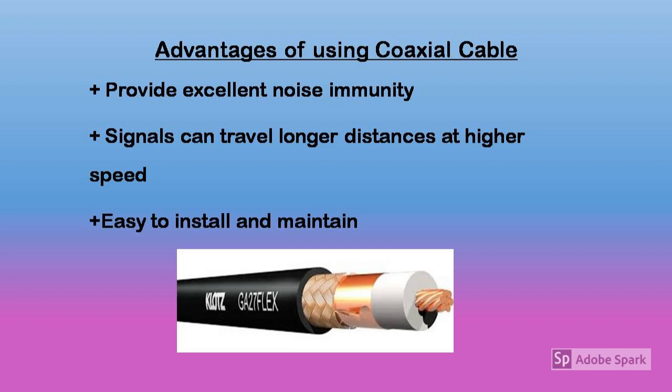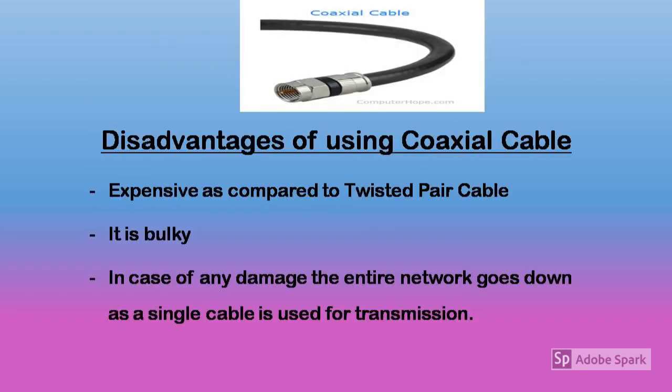The advantages of coaxial cable are that they provide excellent noise immunity due to multiple layers of shielding, and signals can travel longer distances at higher speeds — for example, up to one to two gigabytes per second for a one-kilometer cable. It is also easy to install and maintain. The disadvantages are that it is more expensive than twisted pair cable, it is bulky due to many layers of insulation, and if the cable is damaged the entire network goes down since a single cable is used for transmission.